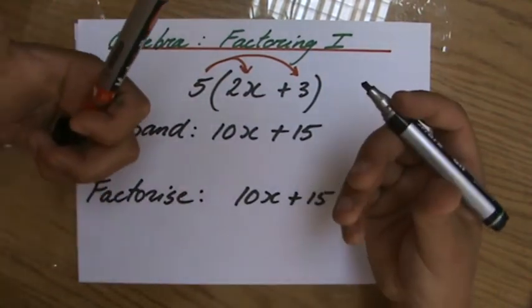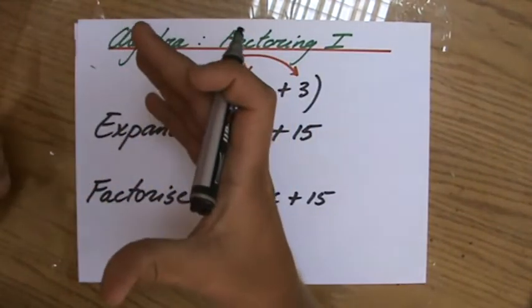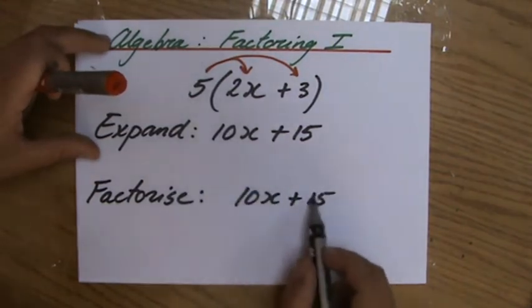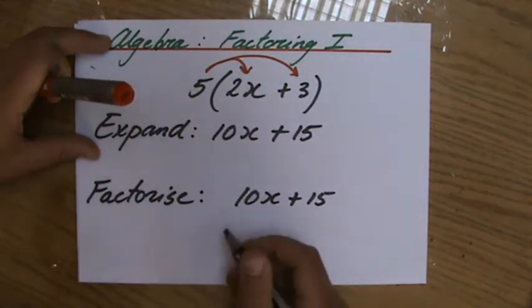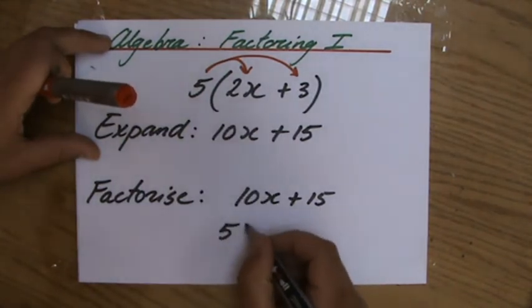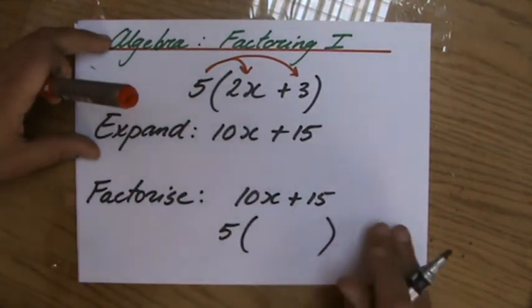You will get an expression, for instance 10x plus 15, and if you're asked to factorize it, it means put it in the brackets, get rid of that common factor. Now what is the common factor or the highest common factor in this case?